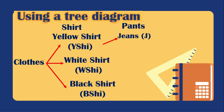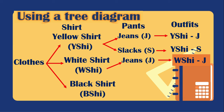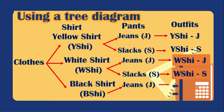For the pants, the yellow shirt can be paired with the jeans (J), producing the outfit yellow shirt and jeans, or with the slacks (S), producing yellow shirt and slacks. The white shirt paired with jeans gives white shirt and jeans, and paired with slacks gives white shirt and slacks. The black shirt paired with jeans gives black shirt and jeans, and the last one is black shirt and slacks.